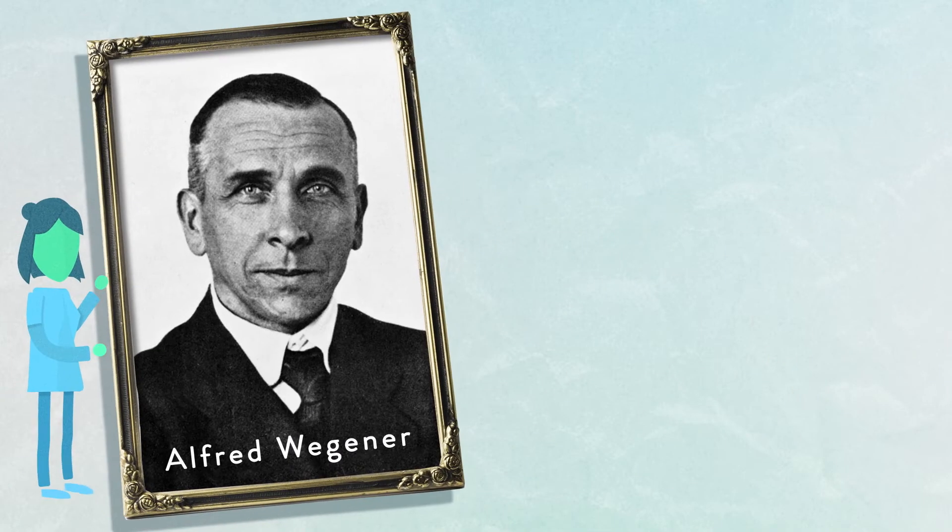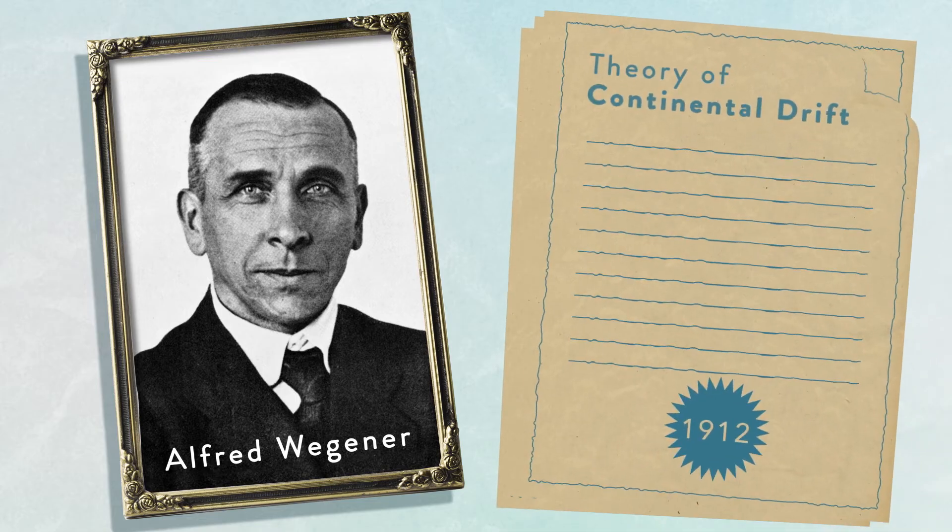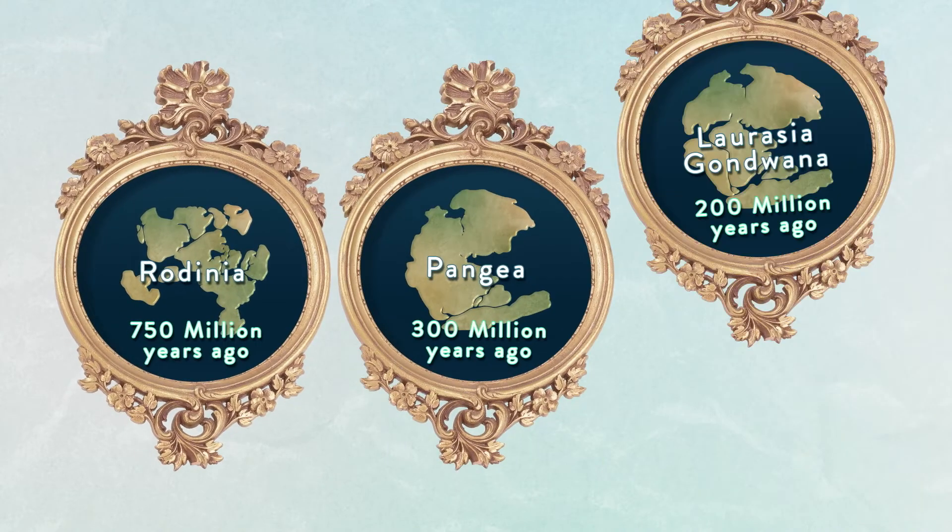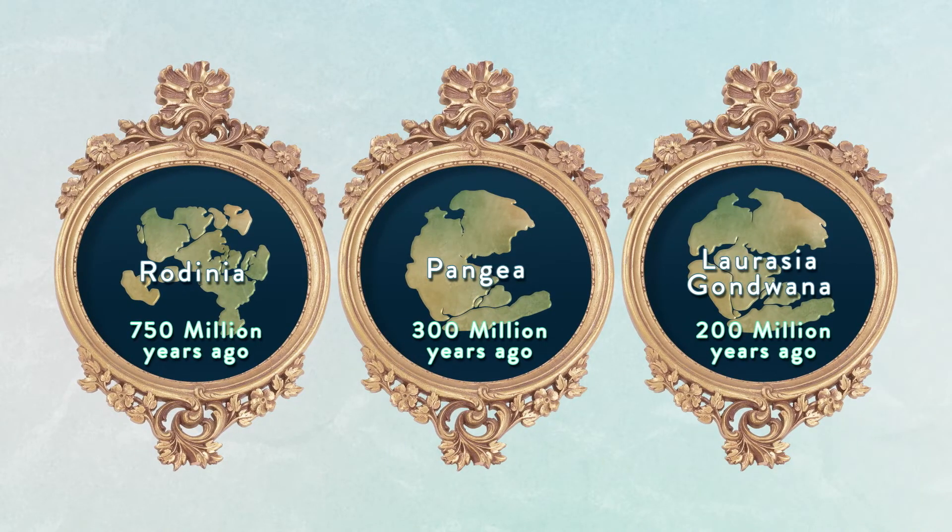Pangaea was first proposed by Alfred Wegener, who outlined his theory of continental drift in 1912. It turns out, supercontinents have formed several times in Earth's history.